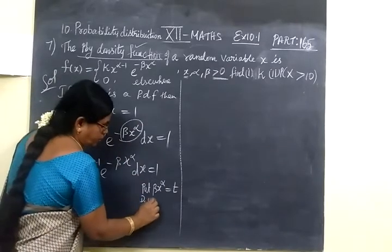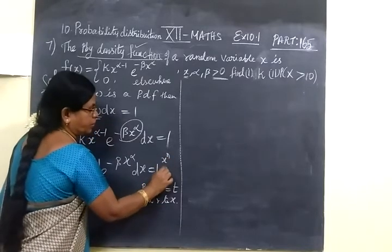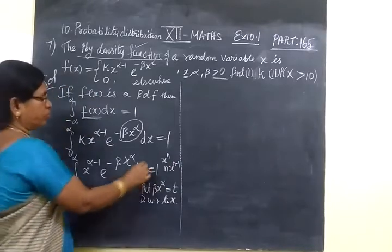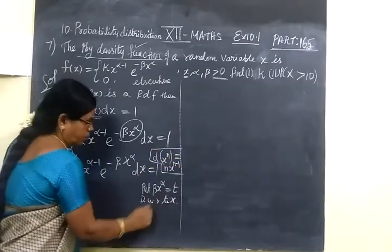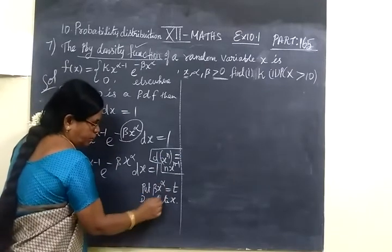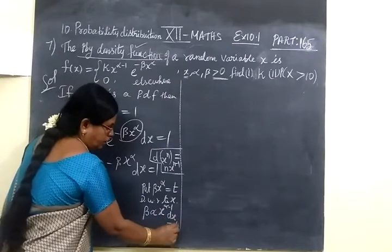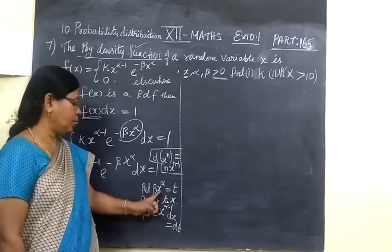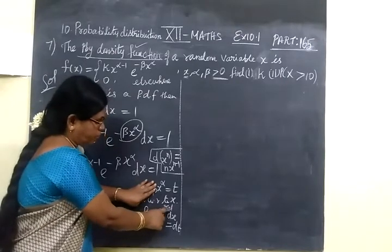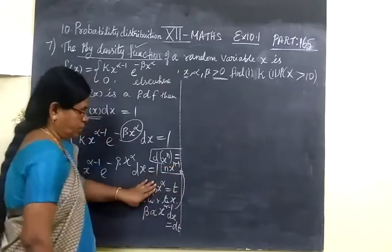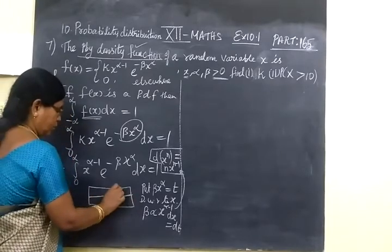Now differentiate with respect to X. The derivative of x^N is N·x^(N-1). So differentiating β·x^α, the power comes down: α·x^(α-1) dx equals dT. We also need to change the limits.